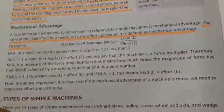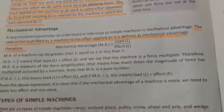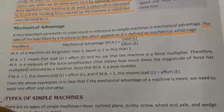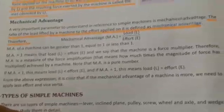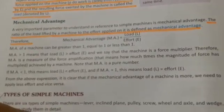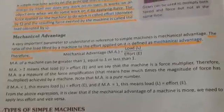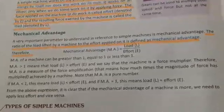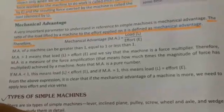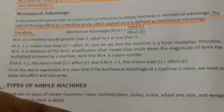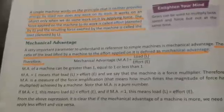Mechanical advantage is a measure of force amplification achieved by a machine. Note that mechanical advantage is a pure number. If mechanical advantage is smaller than one, this means load is smaller than effort. If mechanical advantage is equal to one, this means load is equal to effort. From these expressions, it is clear that if the mechanical advantage of a machine is more, we need to apply less effort, and vice versa.